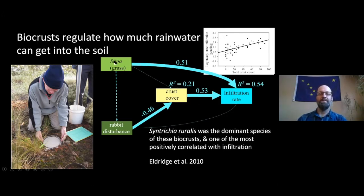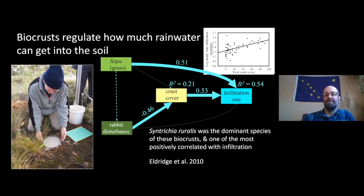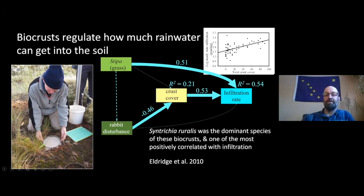We asked: is it proximity to the dominant grasses? This was in Spain, by the way. Is it the amount of biological soil crust cover? Or is it digging disturbance by rabbits? What we found was that rabbits didn't really have a direct effect on infiltration rate, but both Stipa grasses and biological soil crust did. It was kind of the collaboration between grasses and crusts that dictated a lot of the variation in the infiltration rate. These crusts were Centrichia-dominated — Centrichia ruralis, besides cannervis, is another common bio crust moss — and Centrichia was specifically very positively correlated with infiltration.